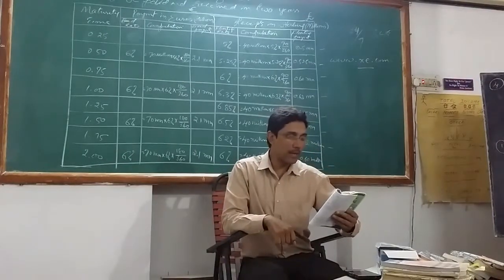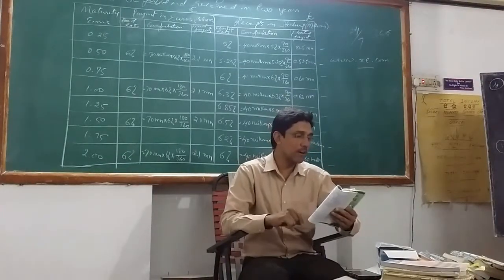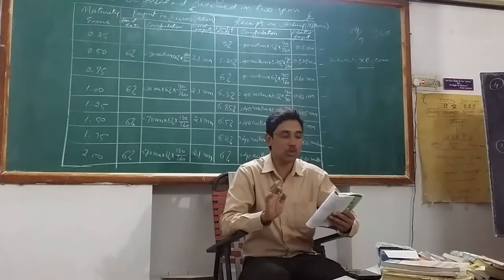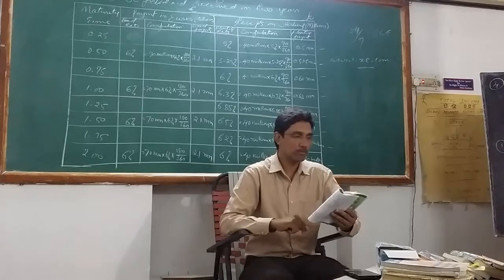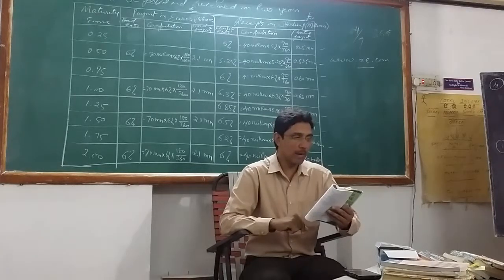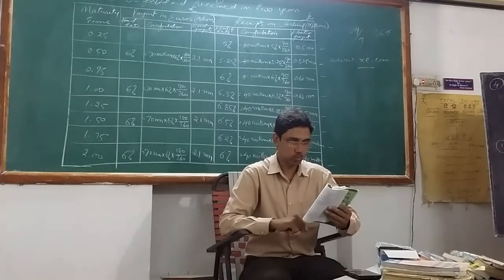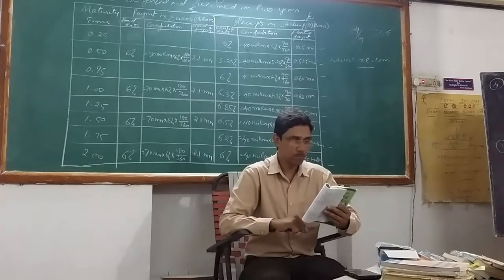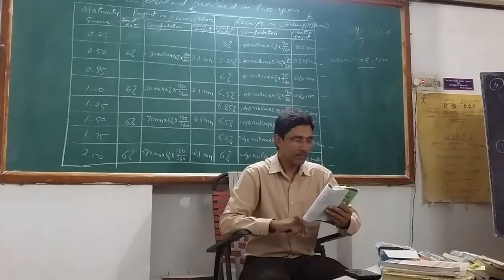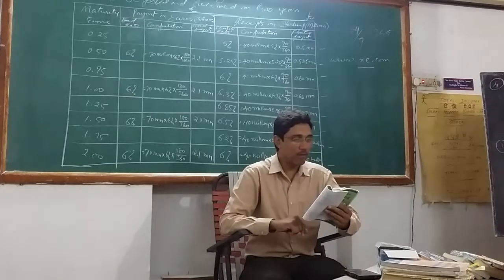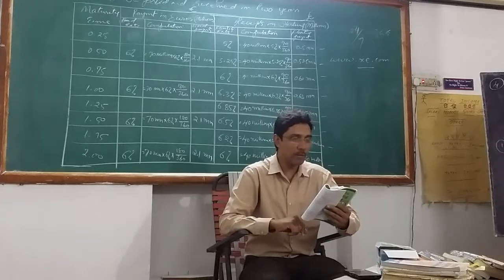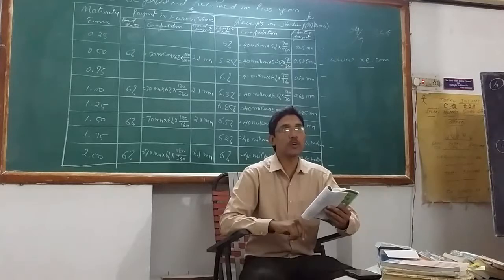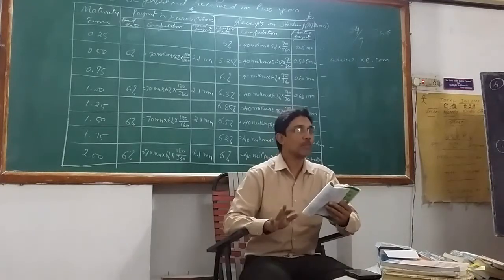From the following particulars, prepare profit and loss account of Hanuman Bank Ltd. for the year ended 31st March. I am reading the second problem, essay type second problem. From the following particulars, prepare profit and loss statement of Hanuman Bank Ltd. for the year ended 31st March, zeros are already omitted.